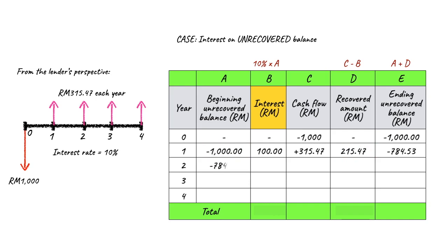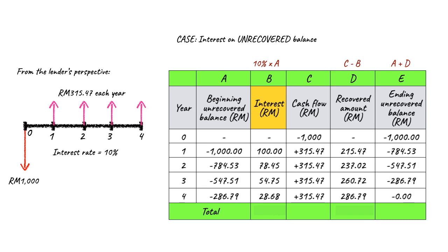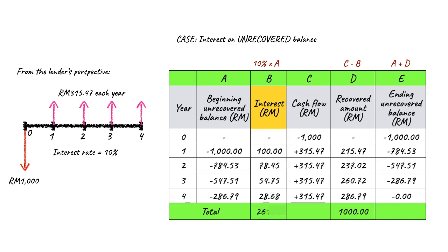In year two, the unrecovered balance is reduced, so the interest rate is based on the unrecovered balance of RM784, not the RM1,000. As there is RM315.47 cash flow coming in, the balance to cover the principal loan becomes higher than the previous year, which is RM237. You repeat the calculation for the remaining years. Finally, if you total up all the recovered amounts, you get exactly RM1,000, which is the principal amount Malik owed. The total interest Malik paid to the lender is RM261.